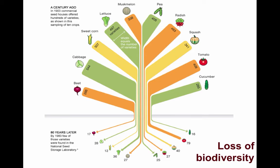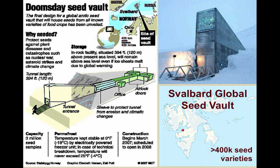For example, a graphic shows 497 varieties of lettuce grown in the US in 1903, but only 36 varieties by 1983, and even fewer today. Since agribusiness focuses on crops that sell well, biodiversity has declined. If a commonly grown crop develops a weakness to disease, that's a real vulnerability. Back in 2008, the Svalbard Global Seed Vault, north of Norway, was opened — containing over 400,000 seed varieties, preserved at a location far enough north and high enough in elevation to endure even if modern civilization ended.